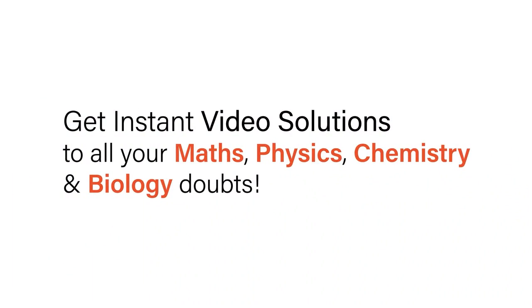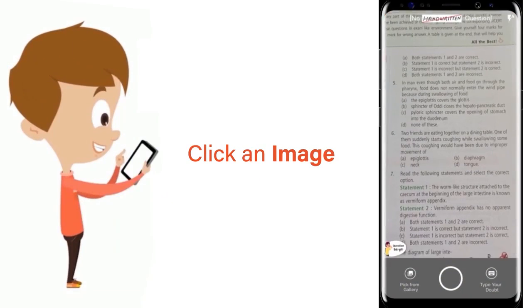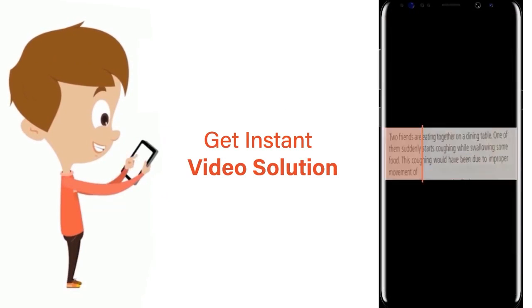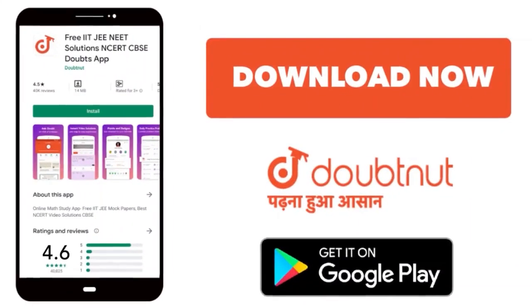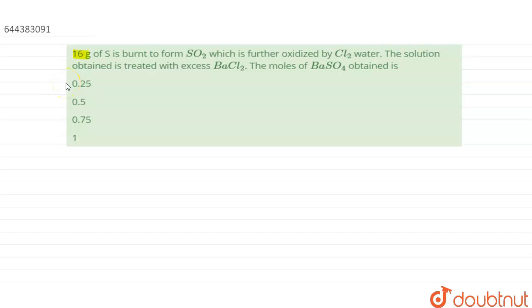With Doubtnut, get instant video solutions to all your maths, physics, chemistry, and biology doubts. Just click the image of the question, crop the question, and get instant video solution. Download Doubtnut app today. Hello everyone, the question is 16 gram of sulfur is burnt to form sulfur dioxide.